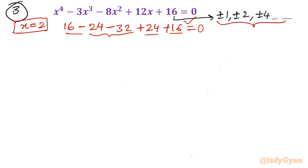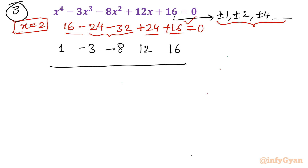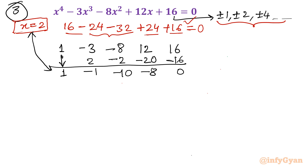I will now use synthetic division. Writing the coefficients of the quartic: 1, negative 3, negative 8, 12, 16, dividing by x equals 2. Carrying through the synthetic division yields coefficients 1, negative 1, negative 10, negative 8, with remainder 0. These are the coefficients of the resulting cubic equation: x cubed minus x squared minus 10x minus 8 equals 0.